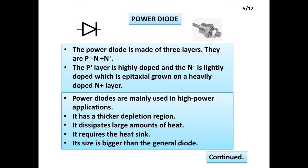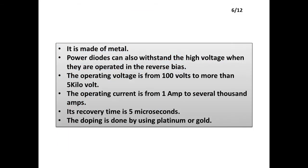Power diodes are mainly used in high power applications. They have a thicker depletion region, dissipate large amounts of heat, and require a heat sink. Their size is bigger than a general diode and they are made of metal. Power diodes can withstand high voltage in reverse bias, with an operating voltage from 100 volts to more than 5 kilovolts, and an operating current from 1 amp to several thousand amps. Their recovery time is 5 microseconds, and doping is done using platinum or gold.